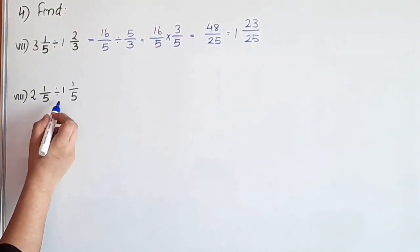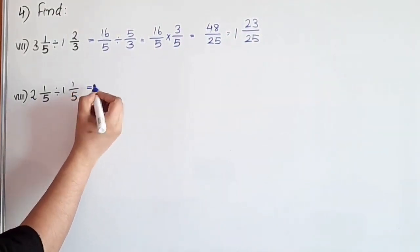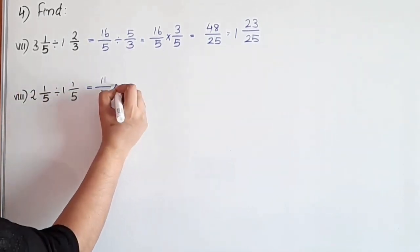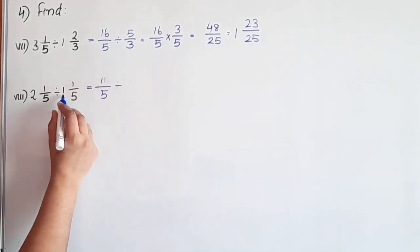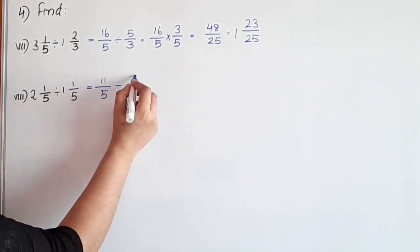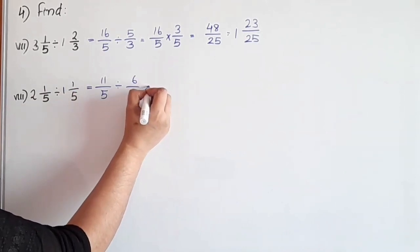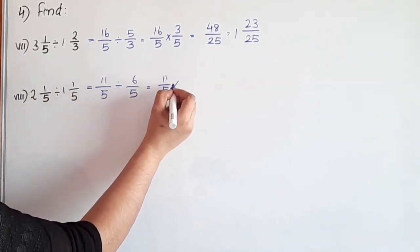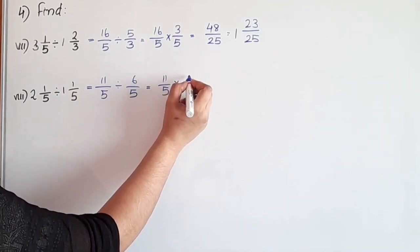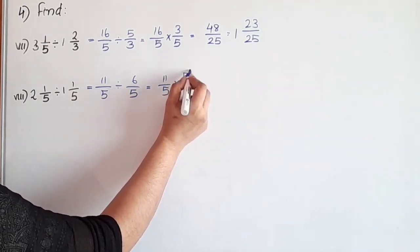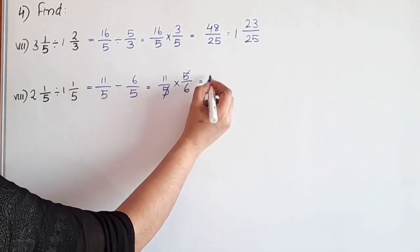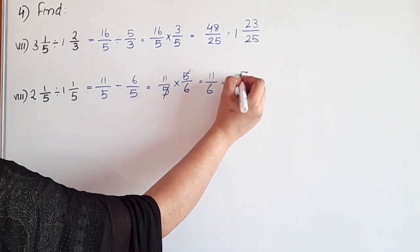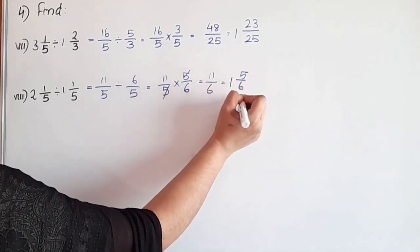Next question: 2⅕ divided by 1⅕. Convert: 5 into 2 is 10, plus 1 is 11, so 11/5. Then 1 into 5 is 5, plus 1 is 6, so 6/5. Now 11/5 divided by 6/5: take reciprocal of 6/5, which is 5/6. The 5s cancel, giving 11/6. 11 divided by 6 is 1 remainder 5. Answer is 1 and 5/6.